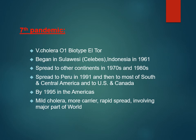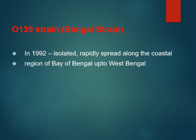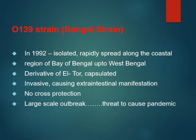The seventh pandemic spread rapidly with high carrier rates. Then came the O139 strain — the Bengal strain. Initially it was thought that only serogroup O1 of Vibrio cholerae caused cholera disease, but in 1992 a strain O139, which does not belong to the O1 group — it belongs to the non-agglutinable group — started from the Bay of Bengal and spread to West Bengal. It was a derivative of El Tor but was capsulated, more invasive, causing extra-intestinal manifestations, and there was no cross-protection between O139 and O1 strains.